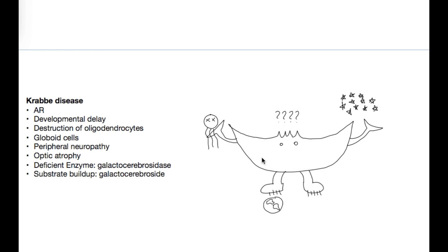For the deficient enzyme and substrate buildup in Krabbe's disease, we've got galactocerebrosidase. Beside the head — the cerebrum — of my crab, I have galaxy stars drawn off to the side. So: galacto from the stars, cerebro beside the cerebrum, side meaning 'to the side,' and -ase meaning it's an enzyme that breaks something down. The substrate buildup is easy to remember because it's just the substrate part of the enzyme name: galactocerebroside.